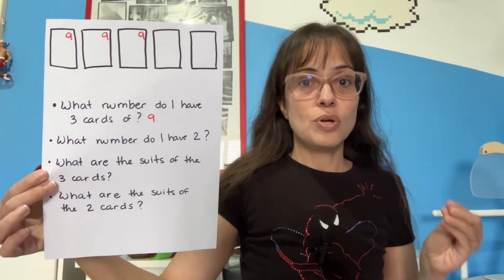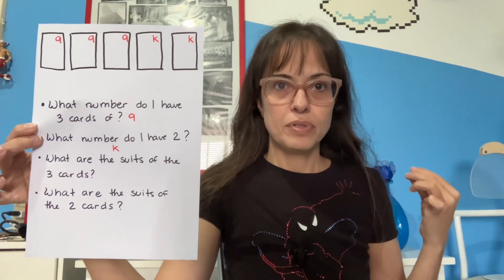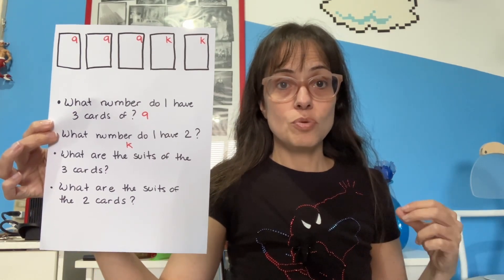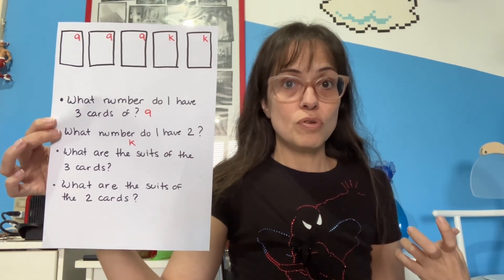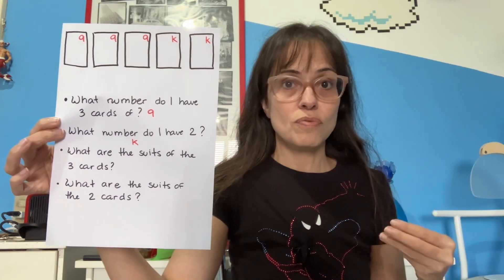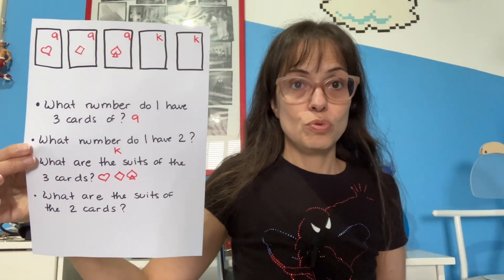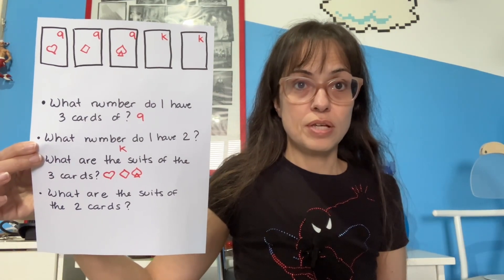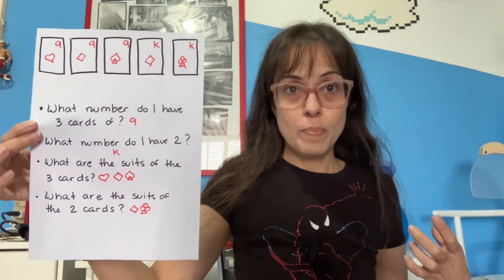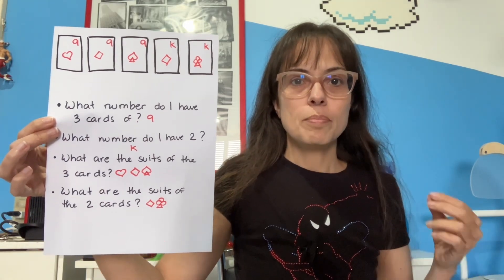Then you ask what card you have two of. In my example, it's a king. But the example is not finished until you also have the suits of the cards. So what are the suits of the three nines? And also, what are the suits of the two kings? This is when you stop asking questions — when your example is completed.